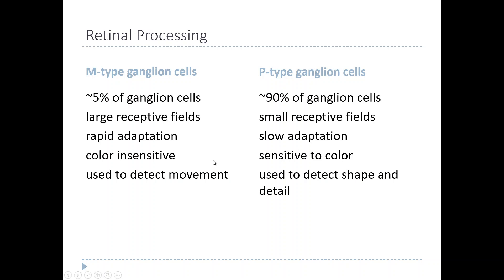The main difference between the two is what type of stimulus they are most important for detecting. M-type ganglion cells are really important for detecting movement — meaning moving images across the retina — whereas P-type ganglion cells, because they're smaller, more numerous, sensitive to color, and slowly adapting, are most useful for detecting shape and detail within an image.